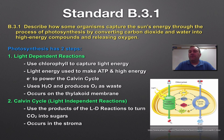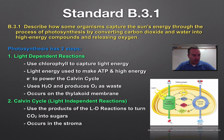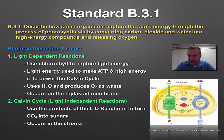Standard B3.1 deals with photosynthesis in more detail. In the light-dependent reaction, you're going to use chlorophyll to capture energy from sunlight. Chlorophyll looks like a magnesium lollipop — light hits the magnesium and an electron pops off. These high-energy electrons are used to make ATP, and some of those electrons are going to move on to the Calvin cycle.